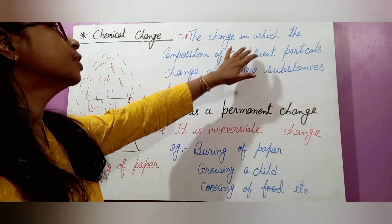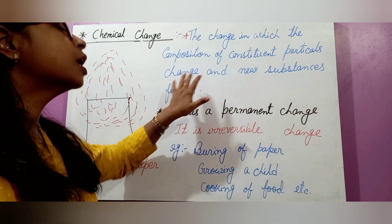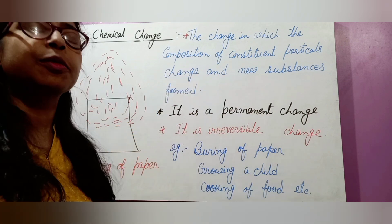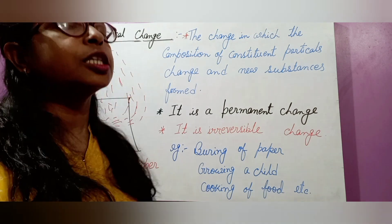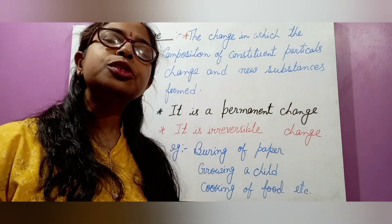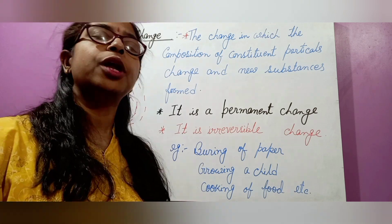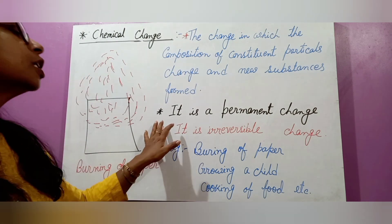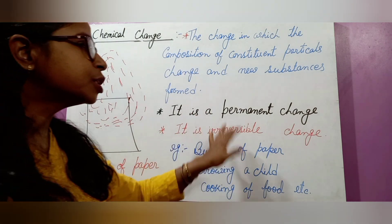So what is chemical change? The change in which the composition of the constituent particles changes and new substances form is known as chemical change. The new substances form and the composition of the constituent particles becomes changed. This chemical change is a permanent change and it is a reversible change.